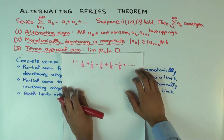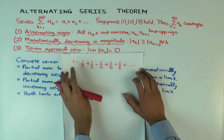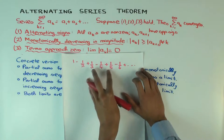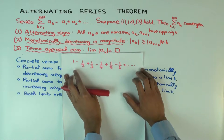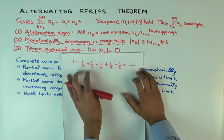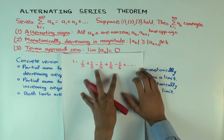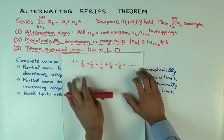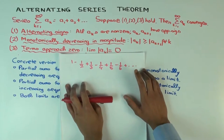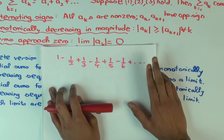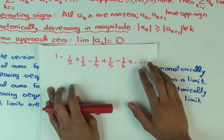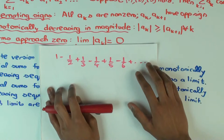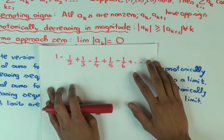Why does this converge? It meets all three criteria. The first criterion: signs are alternating — positive, negative, positive, negative, positive, negative. Terms are monotonically decreasing in magnitude: one-half, one-third, one-quarter, one-fifth, one-sixth, and so on. And the terms approach zero. So therefore the series converges. We also know from other facts that it converges to natural log of two.